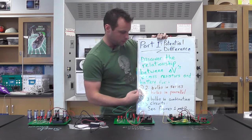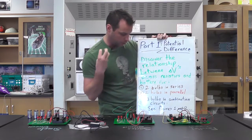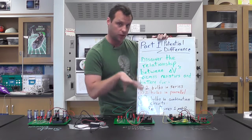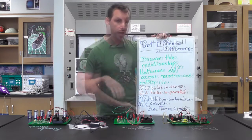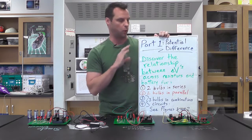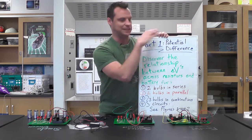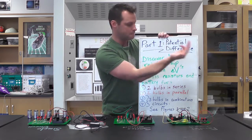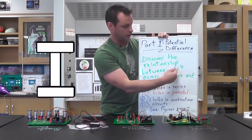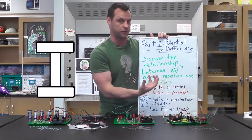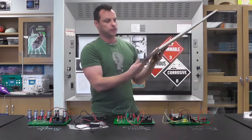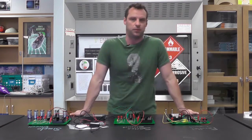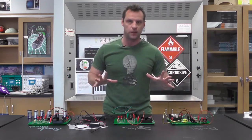Circuit one: two bulbs in series. Circuit two: two bulbs in parallel. Circuit three: three bulbs in combination circuits combining series and parallel. Part two is the exact same thing — just imagine the word current with a capital I there instead of the delta V. The rest of the video is just showing you all the equipment and a couple of tips and tricks.